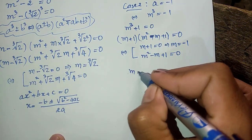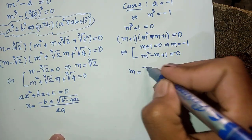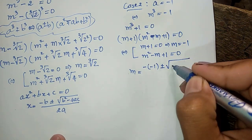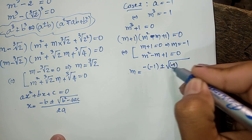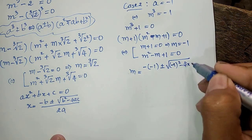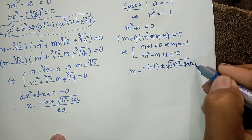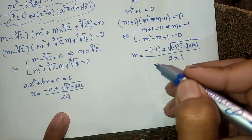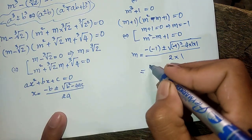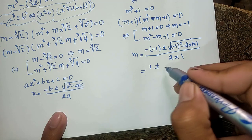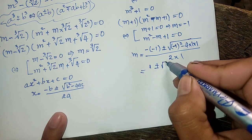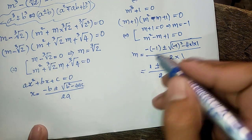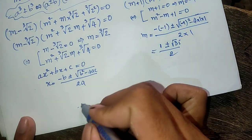And m squared minus m plus 1 equals 0. Applying the quadratic formula: m equals minus (minus 1) plus or minus square root of (minus 1) squared minus 4 times 1 times 1, divided by 2 times 1. This equals 1 plus or minus square root of minus 3, divided by 2, which gives 1 plus or minus square root of 3 times i, divided by 2.